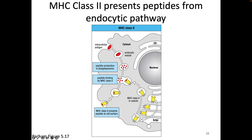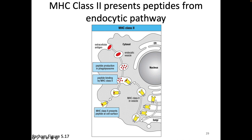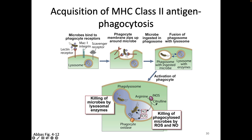We can see MHC class 2 going through the same six steps in order to do presentation. If you remember with class 1, acquiring antigen was pretty passive — the cell didn't have to do anything to get infected, the protein was just there in its cytoplasm. This is different than MHC class 2. In MHC class 2, the cell actively has to do something in order to acquire the antigen.